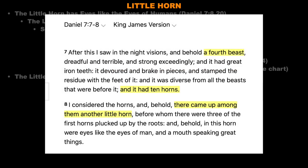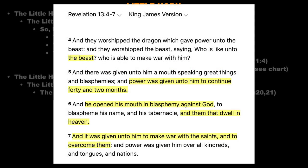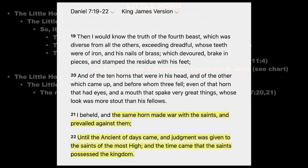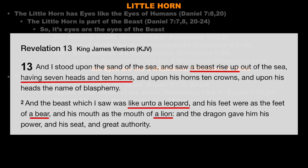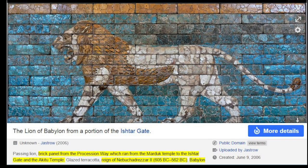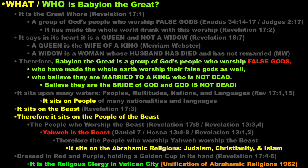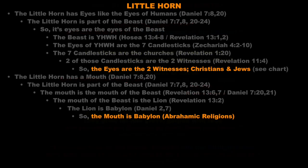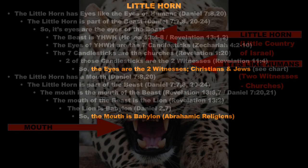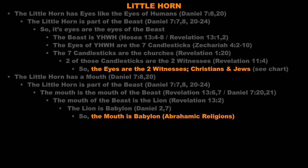Daniel 7:8 and 20 says the little horn also has a mouth. Revelation 13:6-7 and Daniel 7:20-21 confirm the mouth of the little horn is the mouth of the beast. Revelation 13:2 says the mouth of the beast is the lion. Daniel 2 and 7 tell us the lion represents Babylon. So the mouth of the little horn is Babylon — Babylon the Great, the religious empire. Babylon creates a false doctrine causing people to worship YHWH the beast. Therefore, the eyes and mouth of the little horn are the churches of the religious empire, Babylon the Great.